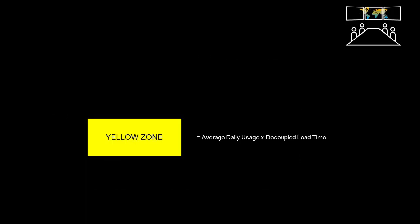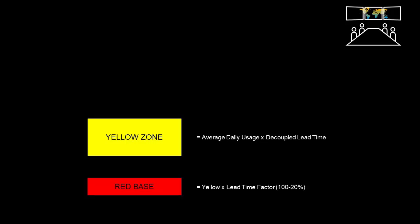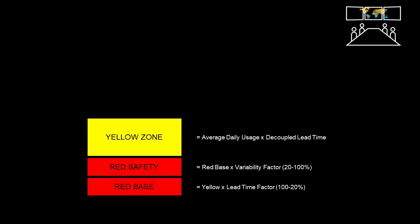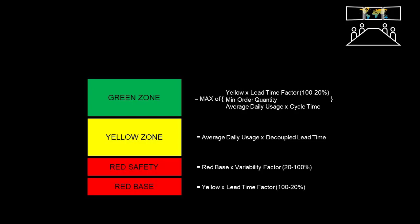Finally, we will look at the formulas used in DDMRP. When calculating the buffer size of a decoupling point, we start by calculating the yellow zone, done by multiplying the average daily use with the decoupled lead time. The second calculation is the red base, achieved by multiplying the yellow zone result with a decided lead time factor. To complete the red zone, the red base is multiplied with the demand variability factor. The green zone is finally calculated, considering also the minimum order quantity if required. If a part number is in the green zone, no additional action is typically needed. The yellow zone signifies a warning that action needs to be taken. The red zone indicates that action required is imminent.